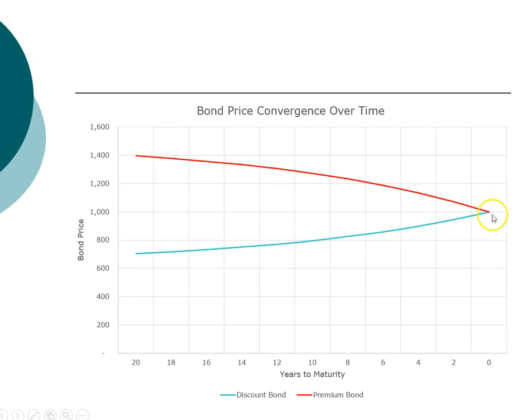On the maturity day, since all the coupon payments have already been made and the only cash flow left is the face value of the bond, both the discount bond and the premium bond will sell at par on the day of maturity.